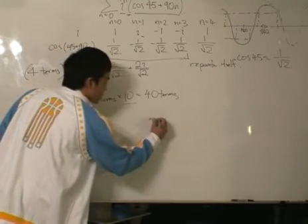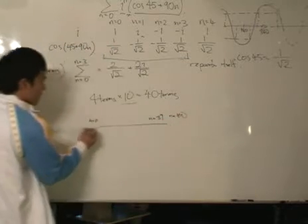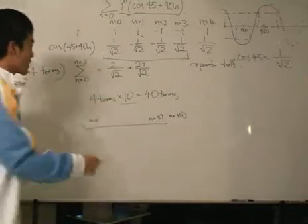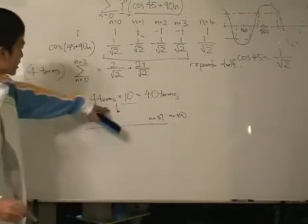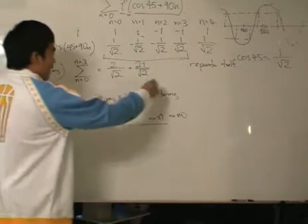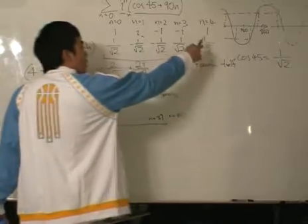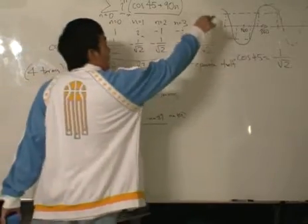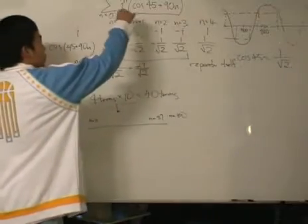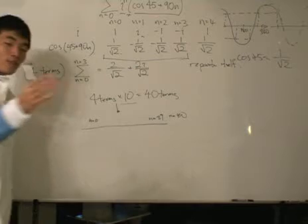From n equals to 0 to n equals to 39 is 40 terms, so all those terms go into the sum of the first 4 terms times 10 — as easy as that. I re-emphasize: it repeats itself, so n equals to 4 is this, n equals to 5, 6, 7 is the same as n equals to 0, 1, 2, 3. So basically I can just times 10, and that will give me 40 terms.